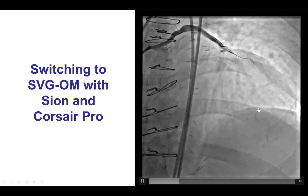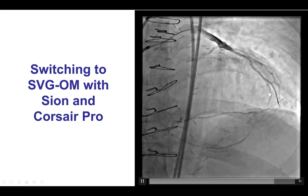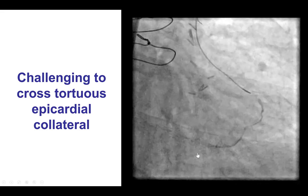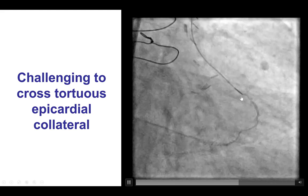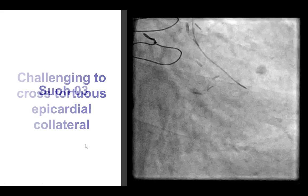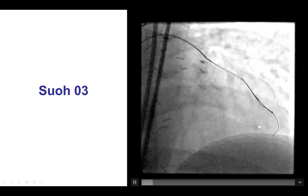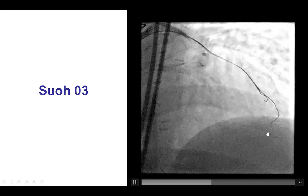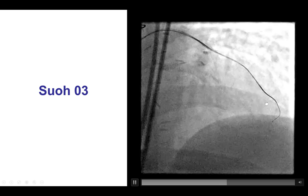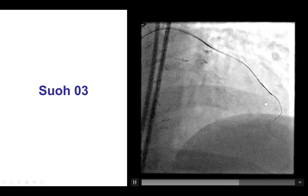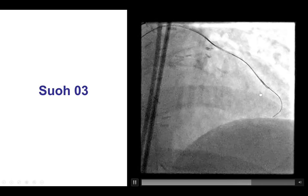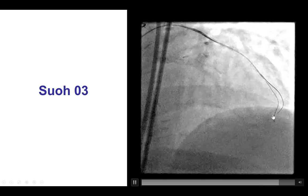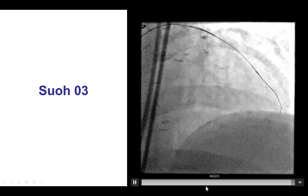Although this collateral appeared to be favorable, there was a significant bend at the early portion of the epicardial collateral going to the posterior descending artery that provided a lot of difficulty in crossing. This is an injection through the microcatheter — this is a Turnpike LP — and we do have significant tortuosity early on. We did multiple attempts to cross this collateral using a SUO-03 guidewire, which is the guidewire of choice for these tortuous epicardial collaterals. It was hard getting into the collateral, but the wire eventually made the bend and successfully crossed all the way to the right PDA.